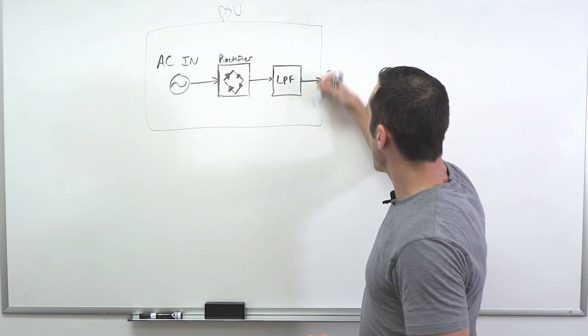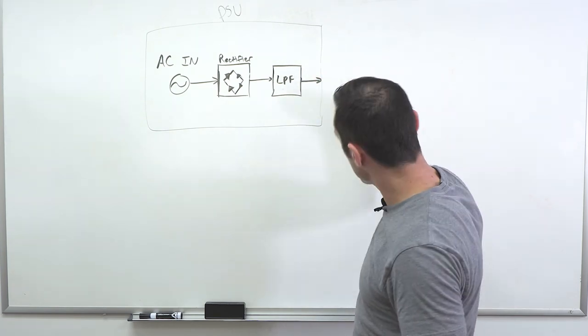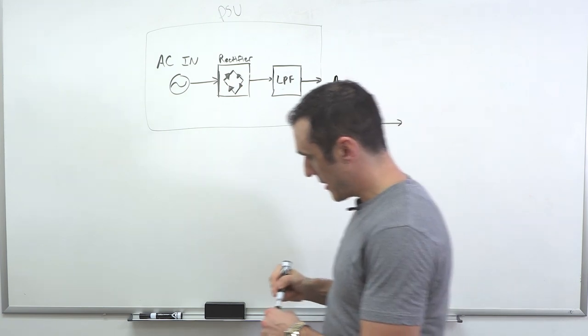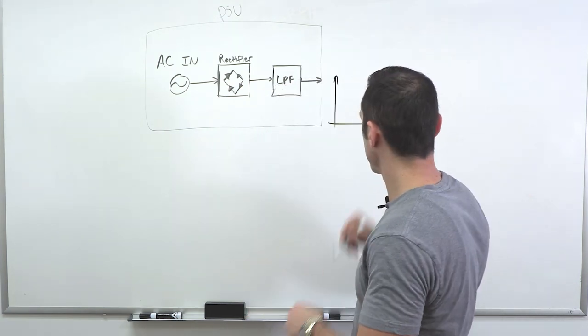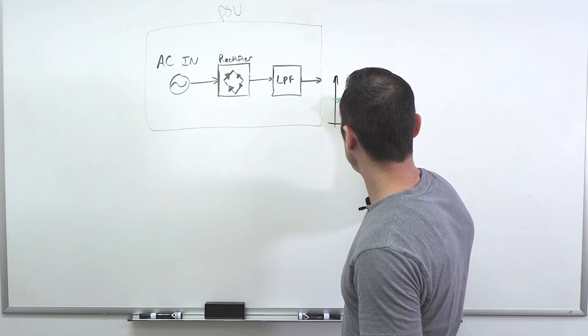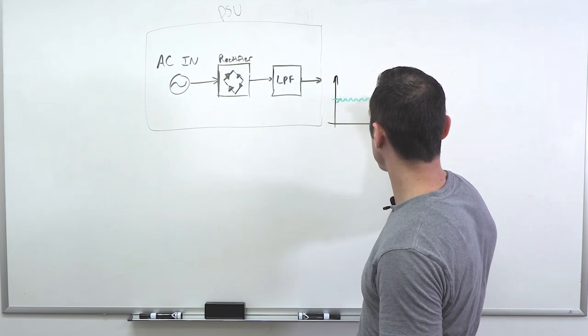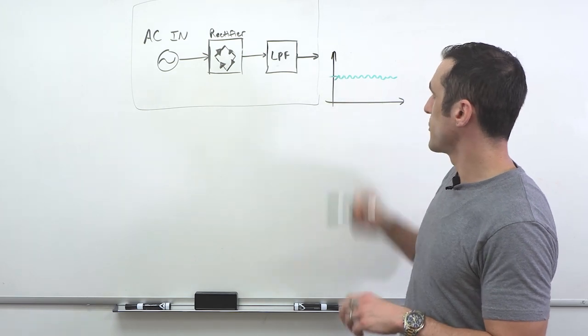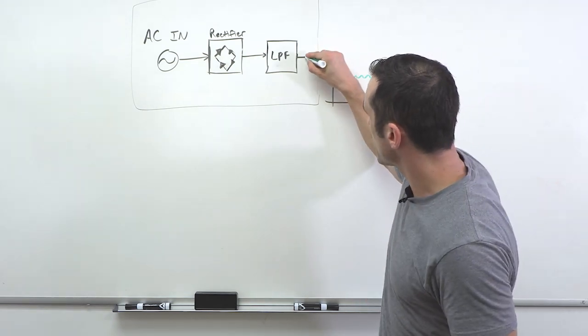The output from your LPF is not going to be perfect DC. If you actually draw a graph of it, it looks a little something like this. So you have your nominal DC voltage, but you've actually got some ripple right around that. This is a little under exaggerated, but you get this ripple just based on your output capacitor that you have